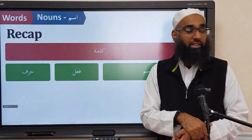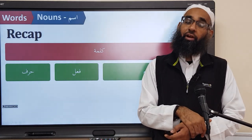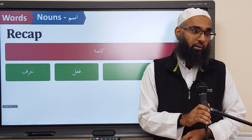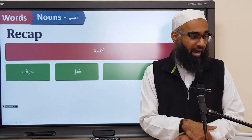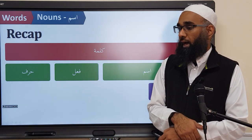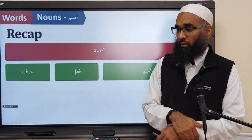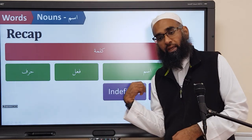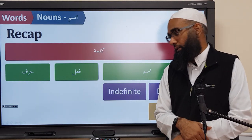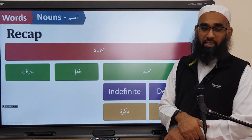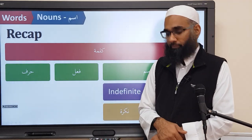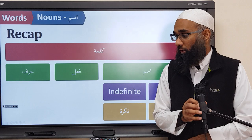And we said regarding the ism, it can have characteristics. What are the first characteristics we discussed? It can be ma'rifah and nakira. What's ma'rifah called? Definite. And nakira is called? Indefinite. So we've covered this much so far. Everybody with me? Okay, so now we're moving on.